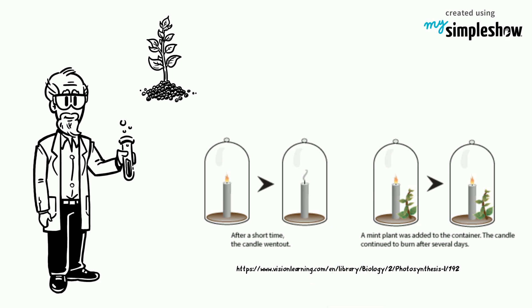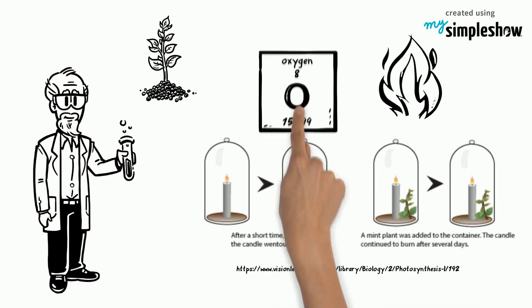Continuing his experiment, he was able to relight the candle. This showed that plants produce a gas that allows fuels to burn. This gas is oxygen.